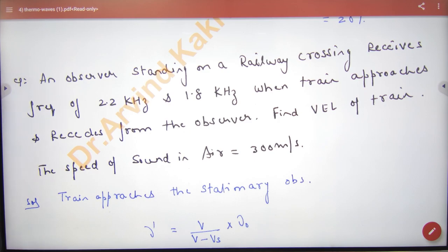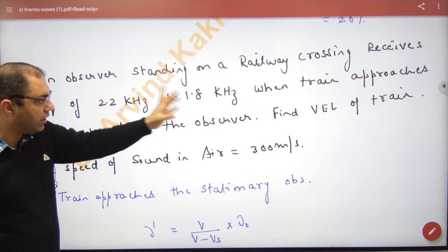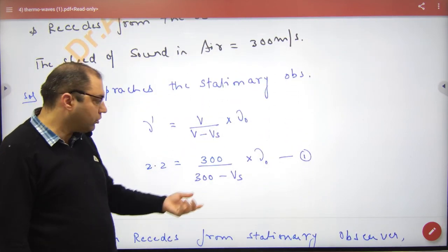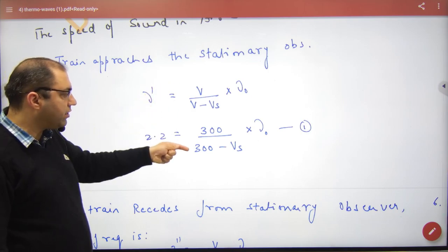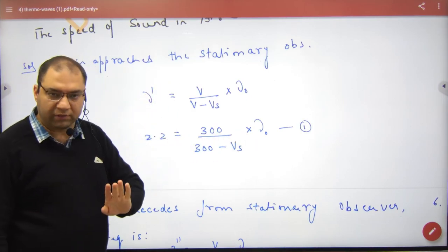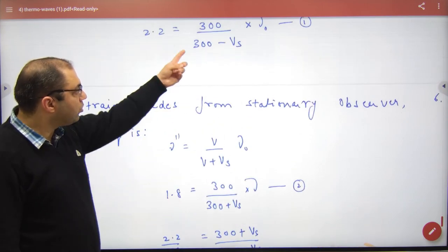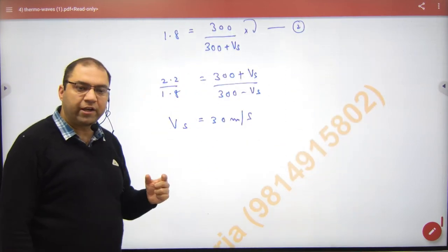An observer standing on a railway crossing receives frequency 2.2 kilohertz when the train is approaching and 1.8 kilohertz when the train is moving away. Find the velocity of the train. Two formulas are used: when the source is passing toward the observer, frequency is 2.2 kHz — sound speed 330, actual frequency nu not, this is equation 1. When it moves away, frequency is 1.8 kHz with a plus sign — equation 2. Dividing the two equations cancels nu not and the source velocity can be calculated to find the train speed.